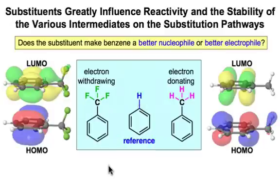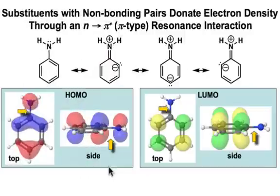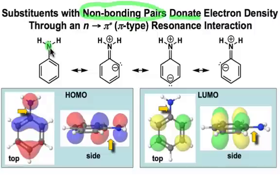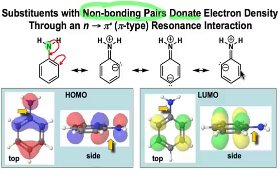Now let's look at substituents that interact with the π system through resonance. First, we'll look at electron donating substituents, which usually involve non-bonding pairs of electrons on substituents bound to the benzene ring. A typical example is the electron lone pair on the nitrogen of aniline. We can see that it donates its pair of electrons into the ring by an n-to-π* π-type interaction, creating the resonance contributors seen here.